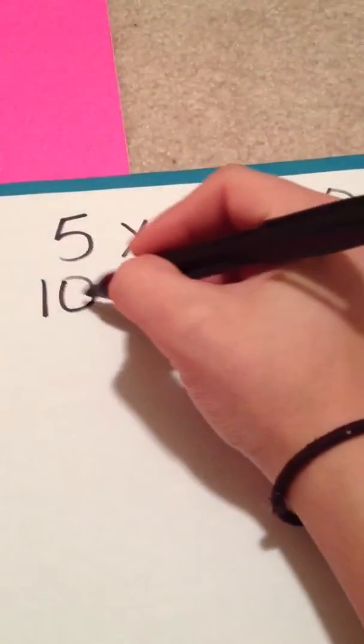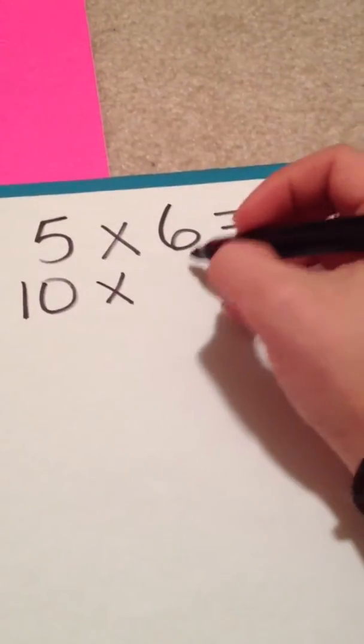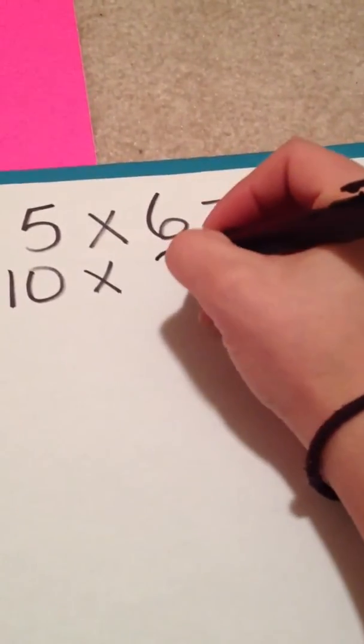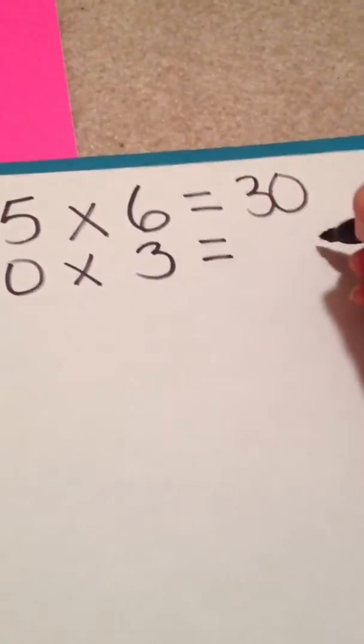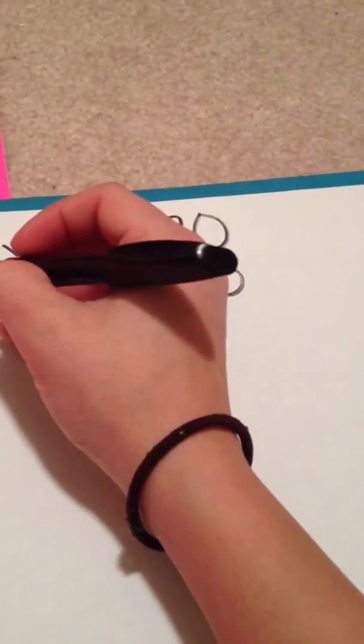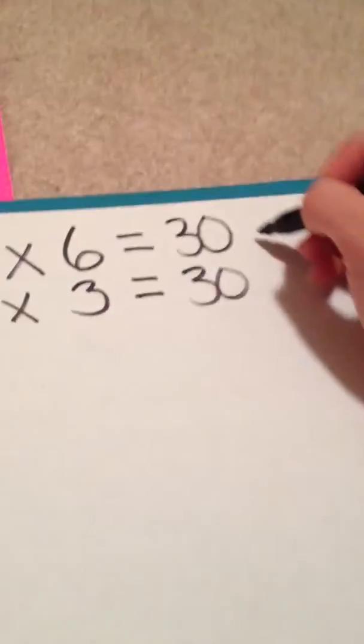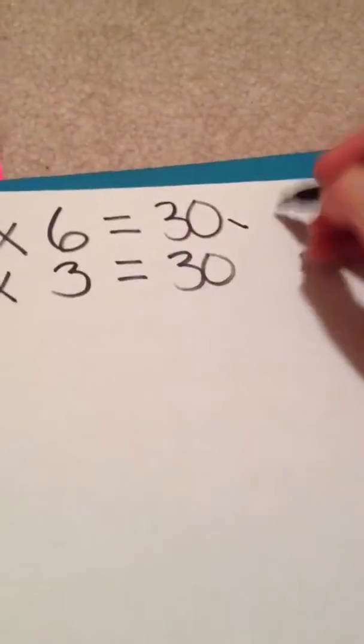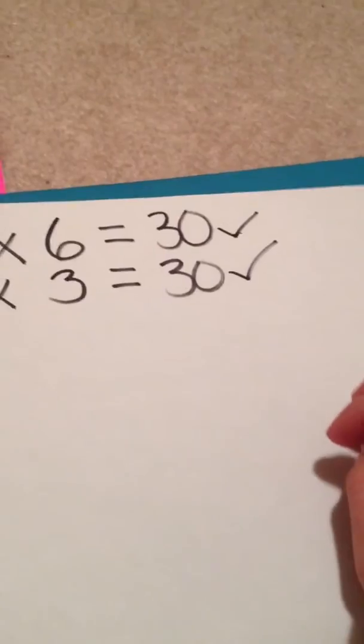If I doubled 5, that means I'll have to half 6. Half of 6 is 3, and 10 times 3 is equal to 30. So we doubled the 5, we halved the 6, and in the end we got both the same answers.